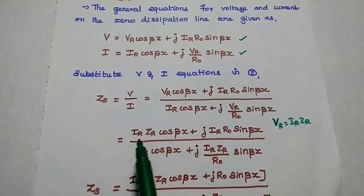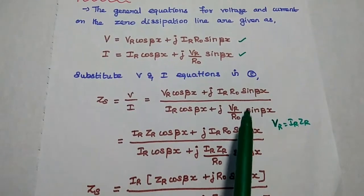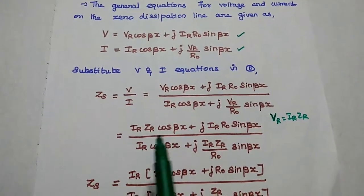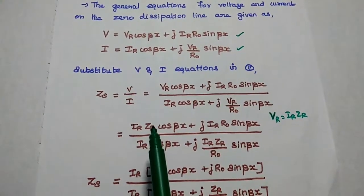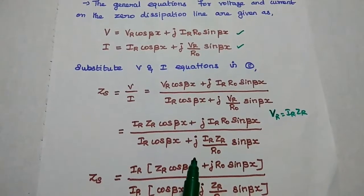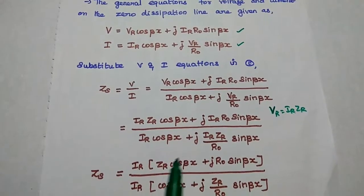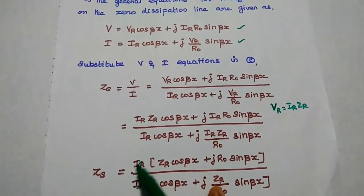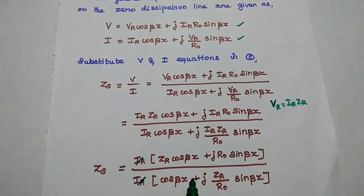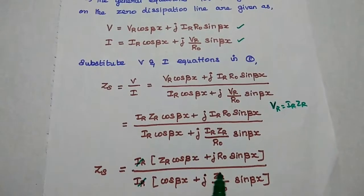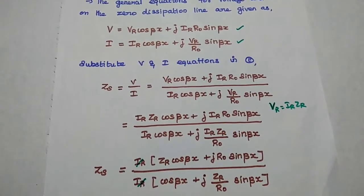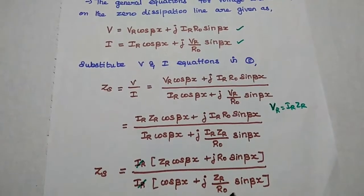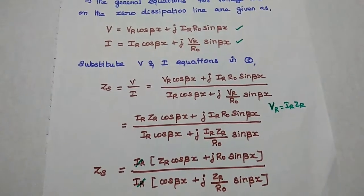So we can replace Vr in the V and I equations with Ir·Zr. Here Vr is replaced with Ir·Zr in the numerator, and in the denominator this Vr is also replaced with Ir·Zr. Now Ir is common in both the numerator and denominator, so we can cancel it. Then we get Zr·cos(βx) plus j·r0·sin(βx) divided by cos(βx) plus j·Zr by r0·sin(βx).